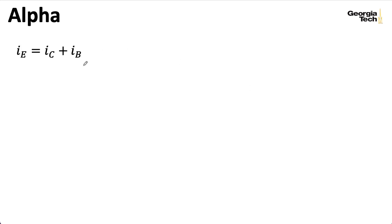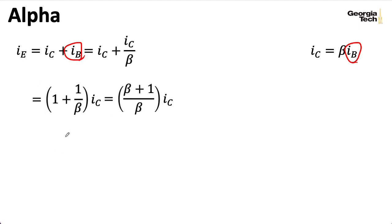So, to derive alpha, let's first write down this relationship that the emitter current is the collector current plus the base current. And then use our IC equals beta IB expression and basically rearrange the expression in terms of IB and plug that in for IB over here. So, I can write 1 plus 1 over beta times IC is equal to the emitter current.